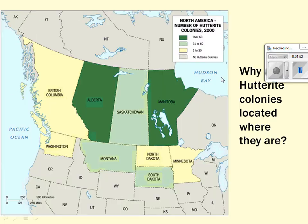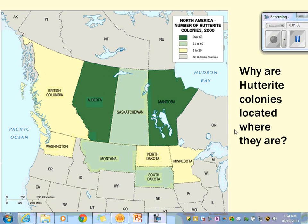The chapter discusses where the Hutterites live. They're located in states in the northern United States and southern Canada — states that have lower populations in general, more rural in nature, especially North and South Dakota, Montana, and even Saskatchewan and Manitoba. These are not highly populated provinces of Canada, so it's easy for them to find locations or colonies. They're not going to be heavily populated or have to come in contact with pop culture very often, and that's why they locate where they do.